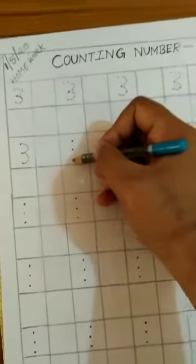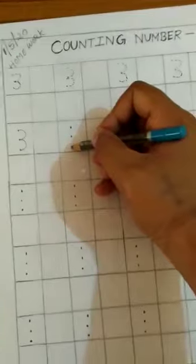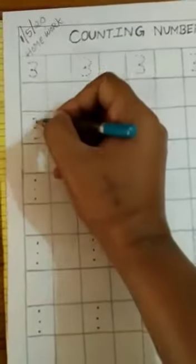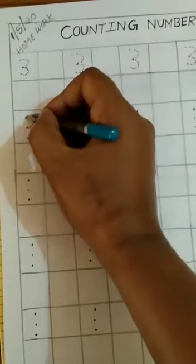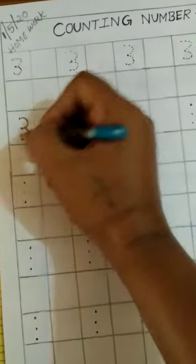1, 2, 3. And tell your children to join these dots. Here curve and here small curve.